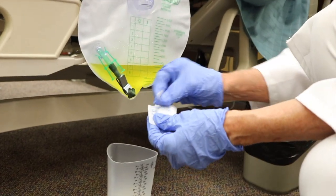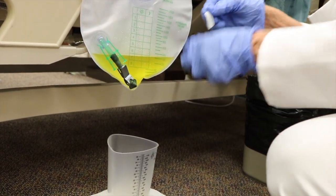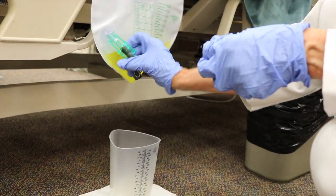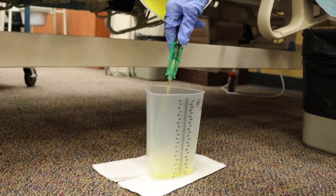Open an alcohol wipe package. Remove the drainage outlet from the bottom of the bag. Place the outlet over the graduate. Unclamp to drain urine from the bag.